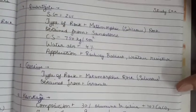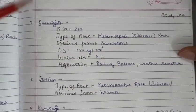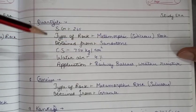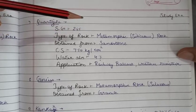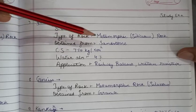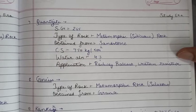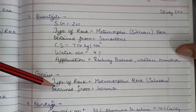The next stone is quartzite. Quartzite is also a metamorphic rock — it is obtained from sandstone, which is a sedimentary rock. The specific gravity of quartzite is 2.65. Its crushing strength is 750 kilogram per centimeter square, with water absorption of four percent. Its application is mainly as railway ballast. It is highly weather resistive.